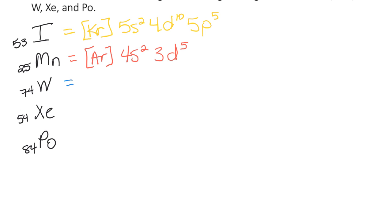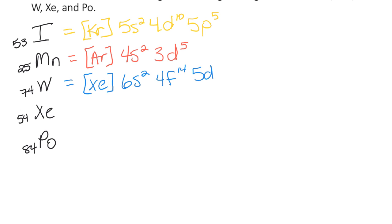Now W (tungsten, 74) — it's in the sixth row, so we go to the end of the fifth row, which is xenon. After xenon, come back to the sixth row: [Xe] 6S2 (to barium), then that little star means we go to 4F next, so 4F14 (to ytterbium, Yb), then back up to 5D4. Adding: 54 + 2 = 56, + 14 = 70, + 4 = 74. Correct.